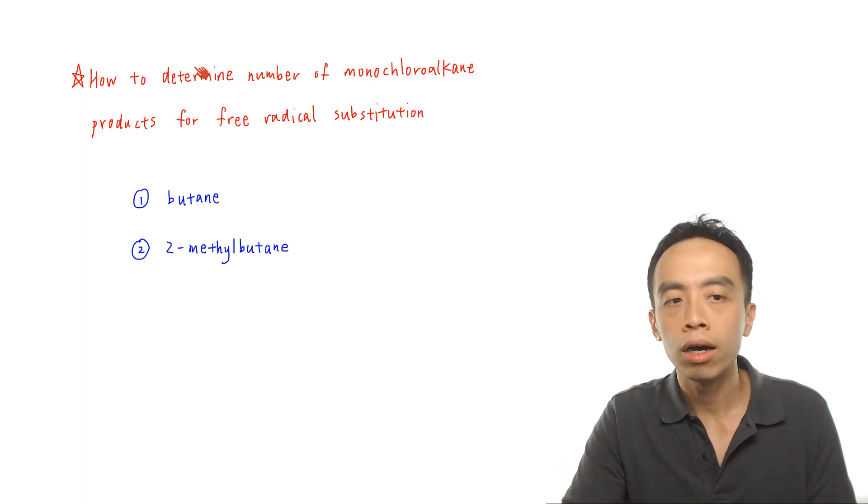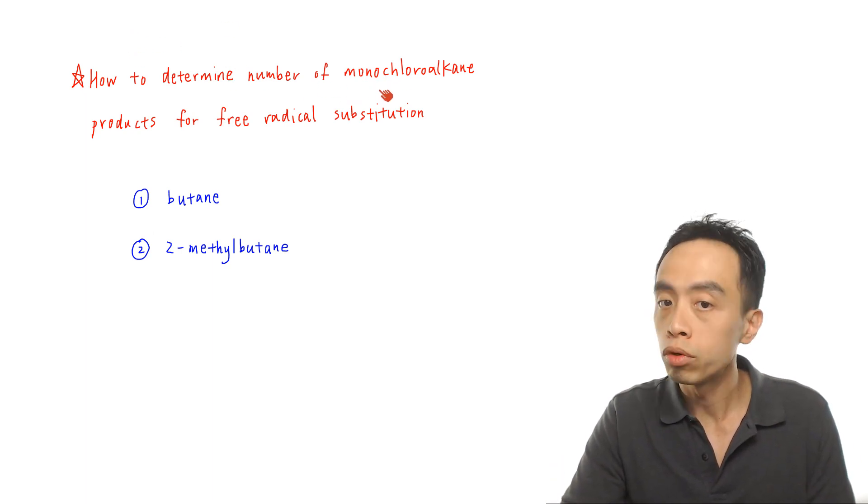In the topic of alkanes, when we run through the mechanism of free radical substitution, sometimes we encounter questions which require us to predict the number of mono-substituted products when a particular alkane undergoes free radical substitution. In this video, we want to discuss how to determine the number of mono-substituted products for free radical substitution, and we also want to predict the expected ratio of these products. The discussion focuses on how to determine the number of mono-chloroalkane products for free radical substitution.